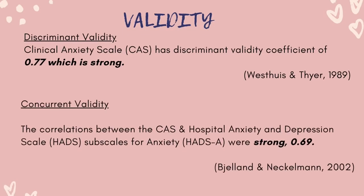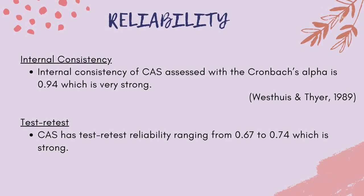Regarding discriminant validity, the Clinical Anxiety Scale has a discriminant validity coefficient of 0.77, which is strong. For concurrent validity, the correlations between the CAS and the Hospital Anxiety and Depression Scale (HADS) sub-scale for anxiety (HADS-A) were strong at 0.69. The internal consistency assessed with Cronbach's Alpha is 0.94, which is very strong. For test-retest reliability, the CAS ranges from 0.67 to 0.74, which is strong.